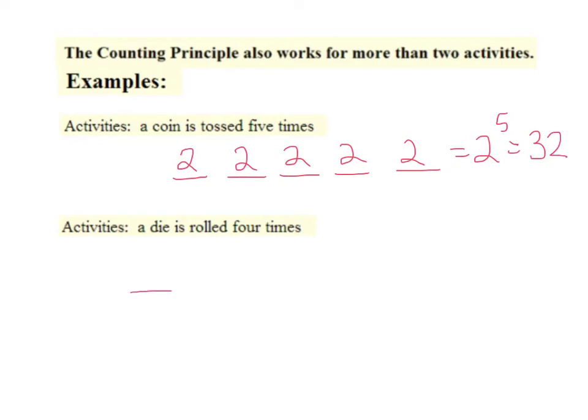If you have a die, one die, one dice, two die, is rolled four times, then you have six possibilities for each one. Which means that you would have six to the fourth power, which is 1,296 possibilities.